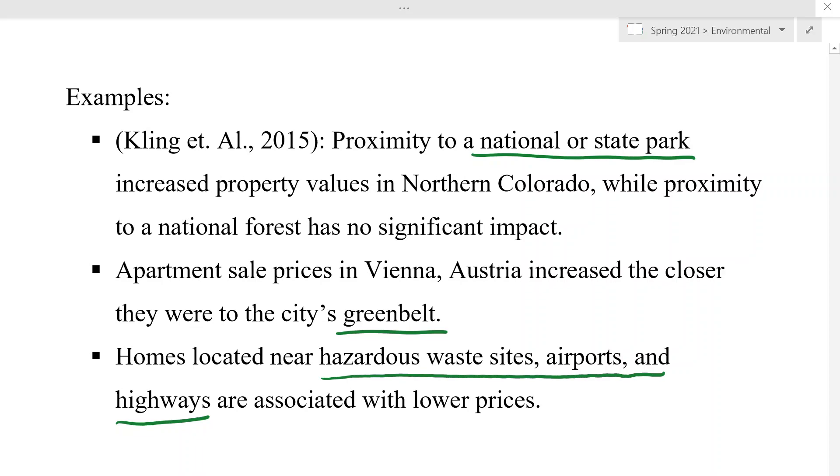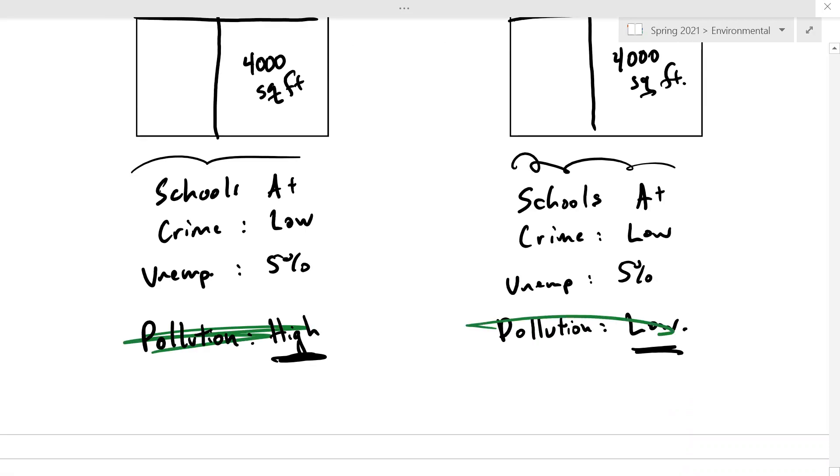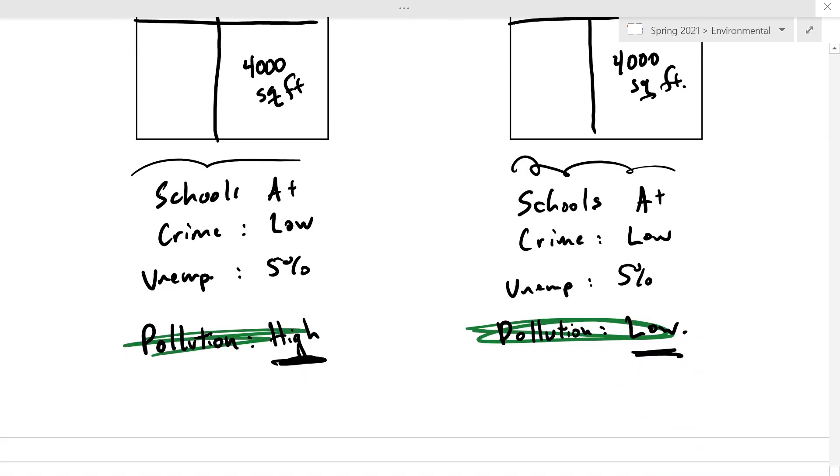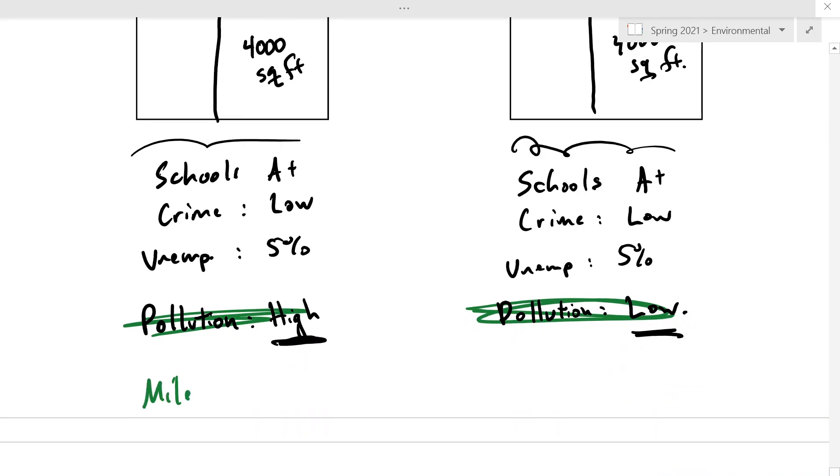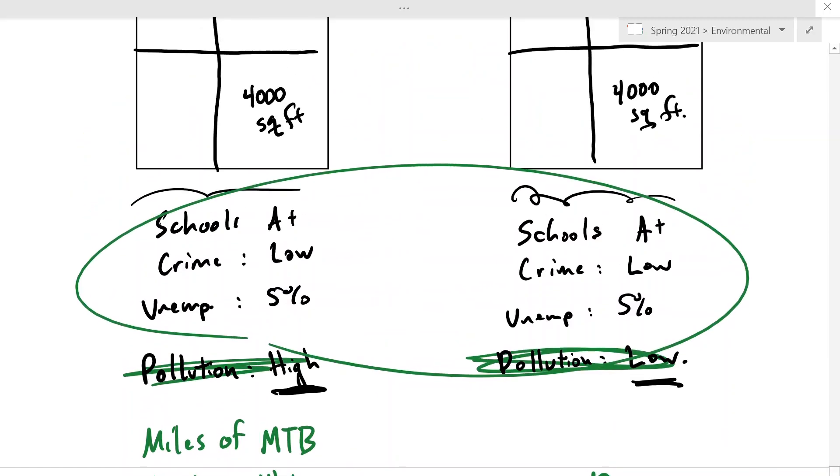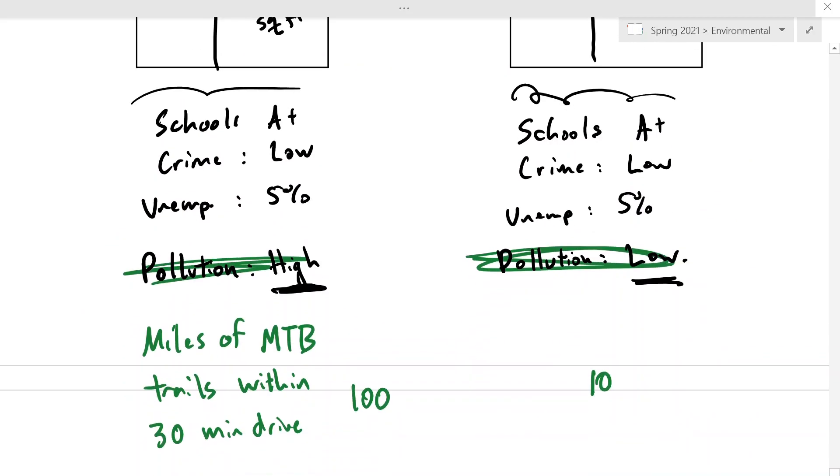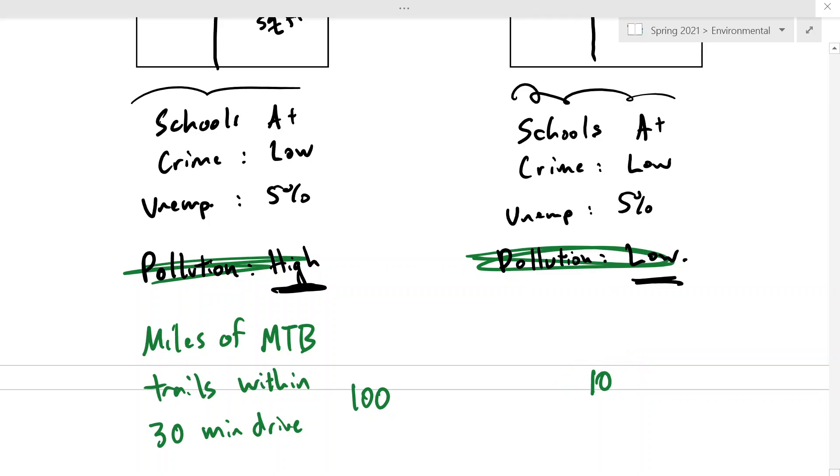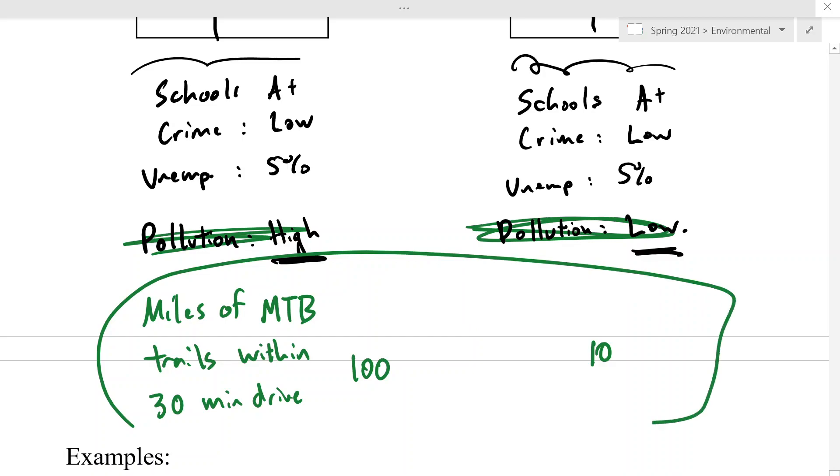You could use the same thing for something like, instead of using pollution, you could try to look at these, similar idea, but you look at miles of mountain biking trails within a 30 minute drive. And so, if this place has 100 miles of trails, and this place only has 10 miles of trails, then if all of the other characteristics about the house are the same, except one has more mountain bike trails and the other one has less, then this hedonic pricing technique can help us understand what is the value of a trail system, or what is the value of living close to the beach, or what is the value of all sorts of other environmental resources.